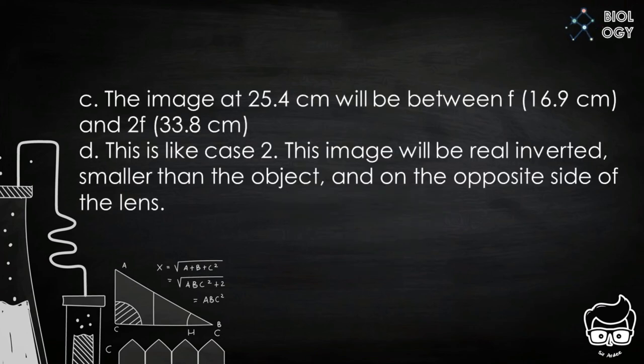For question letter C, the image at 25.4 cm will be between the F point which is 16.9 cm and 2F point which is equal to 33.8 cm. For letter D, this is like case number six. The image will be real, inverted, smaller than the object and on the opposite side of the lens.